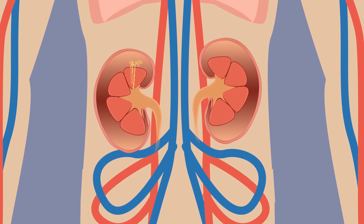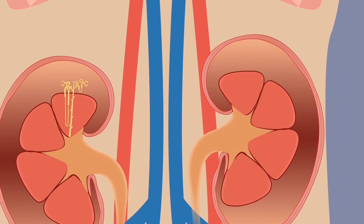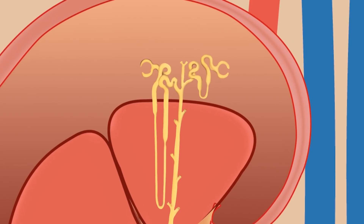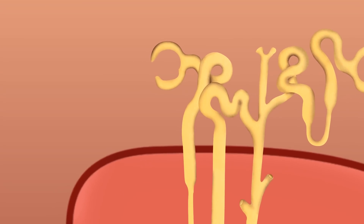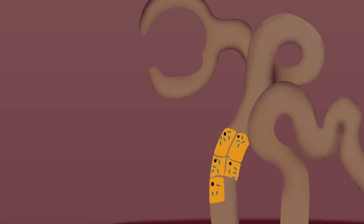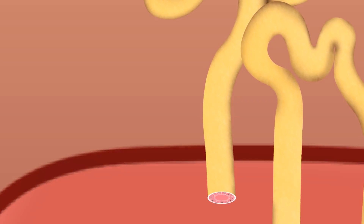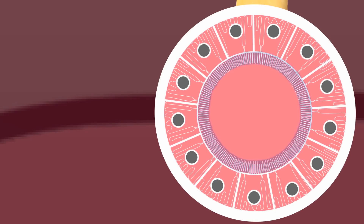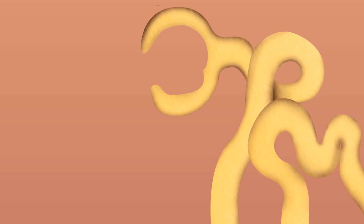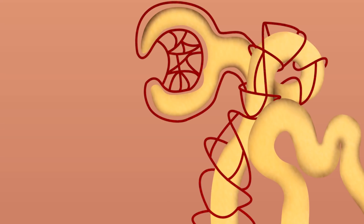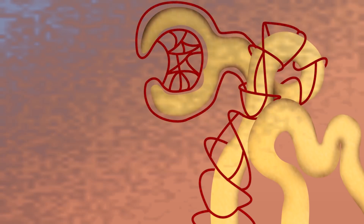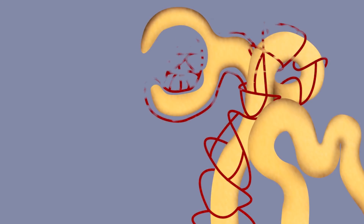The proximal convoluted tubule cells are adapted for reabsorption in three ways: firstly, there are numerous mitochondria; secondly, there is a large surface area due to the microvilli and basal channels; and thirdly, the blood capillaries are close.